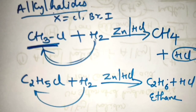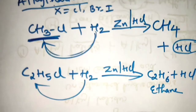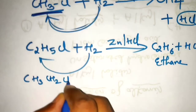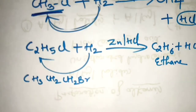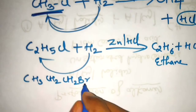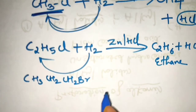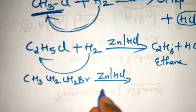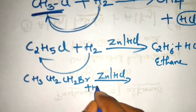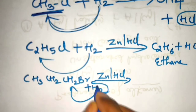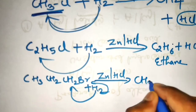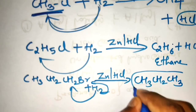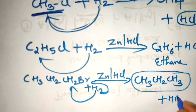You can also take propane. One example: I will take bromopropane, CH3CH2CH2Br. From bromopropane you have to prepare propane. Same condition: Zn, HCl. One hydrogen from H2 will go here, and one hydrogen will come along with the bromine. So it will form CH3CH2CH3 — that is propane — plus HBr.